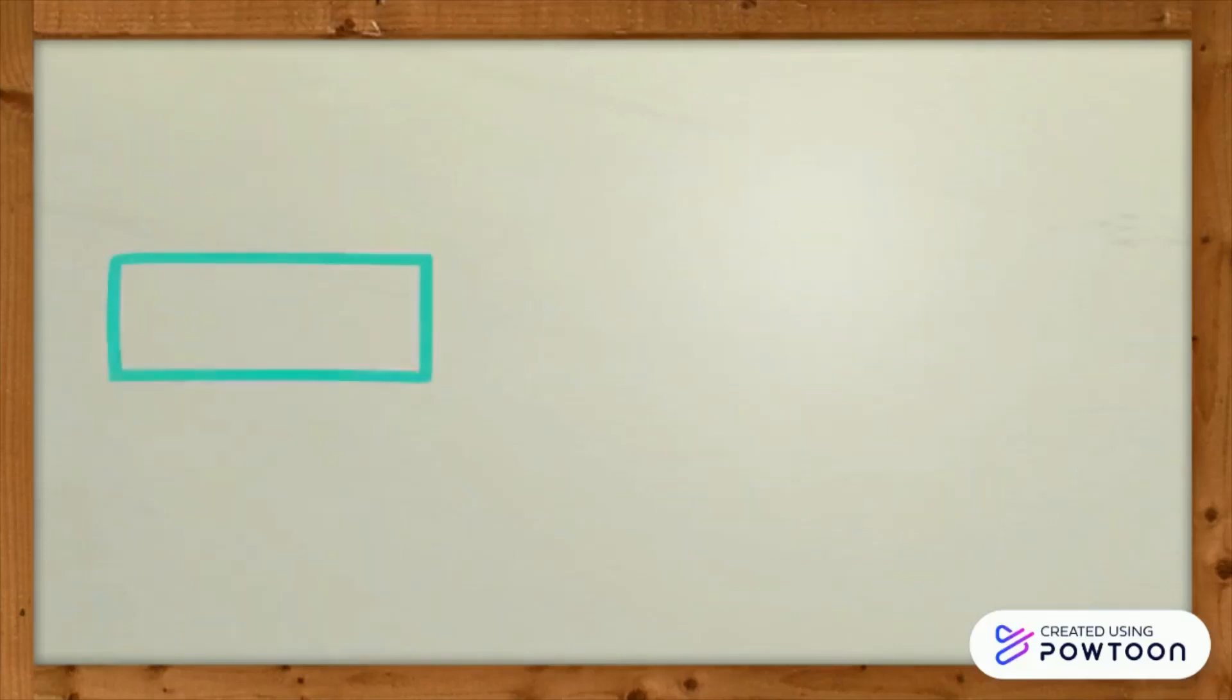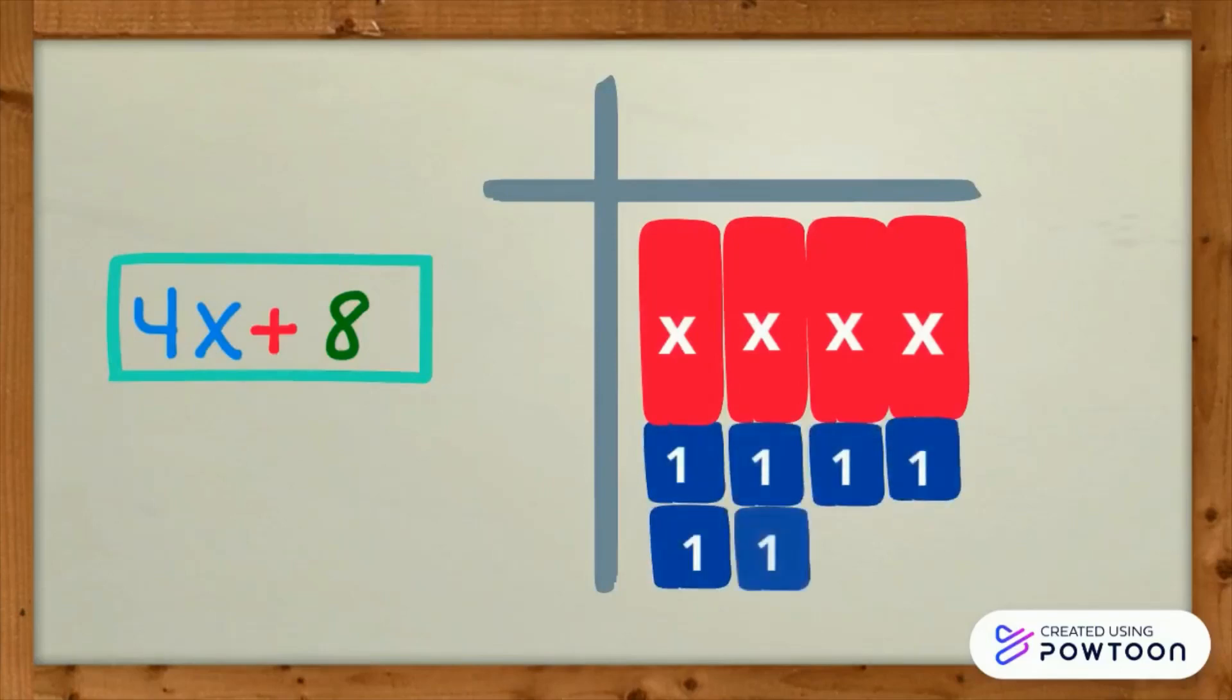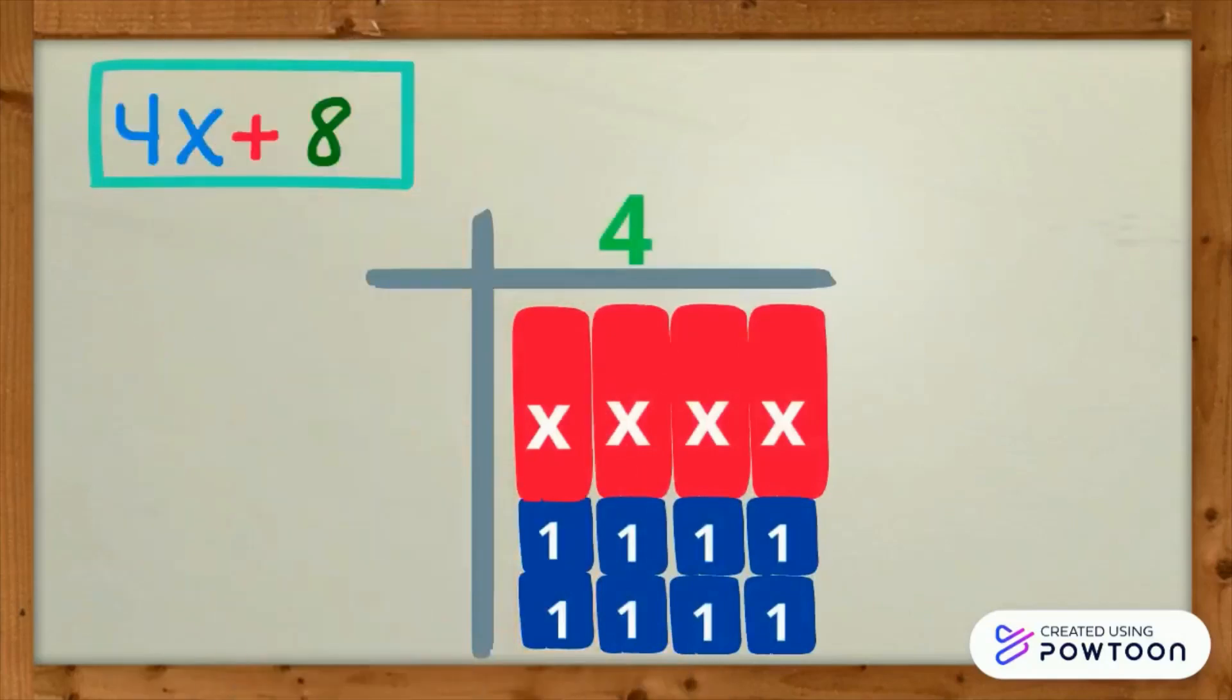In 4x plus 8, we need 4 x tiles and 8 unit tiles. Arrange the tiles to a rectangle following the size of the sides. We have 4 unit tiles, 1 x and 2 units on the side. Therefore, the factors are 4 quantity x plus 2.